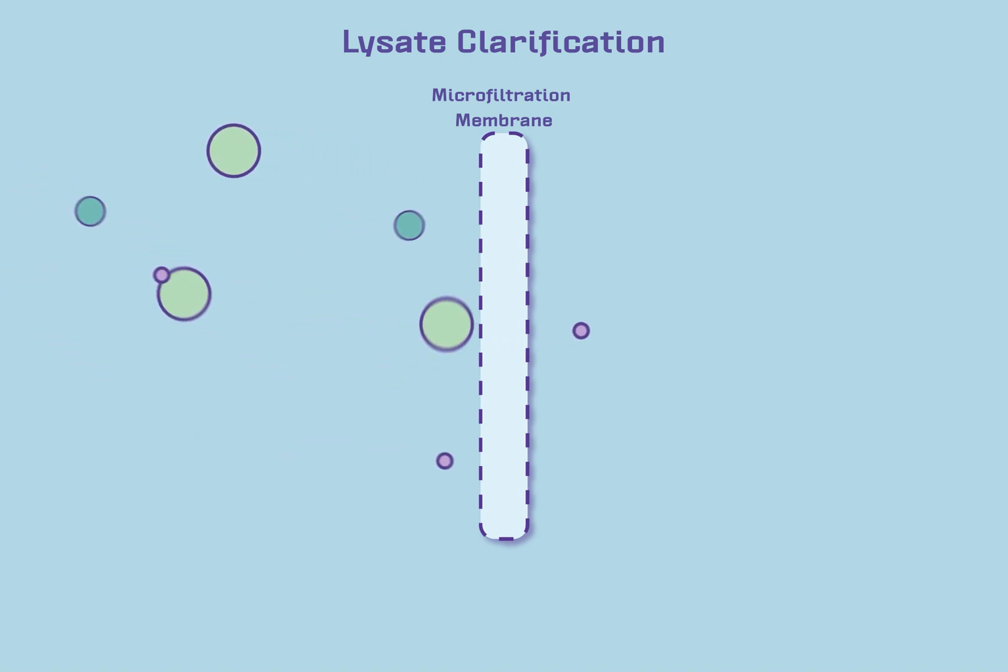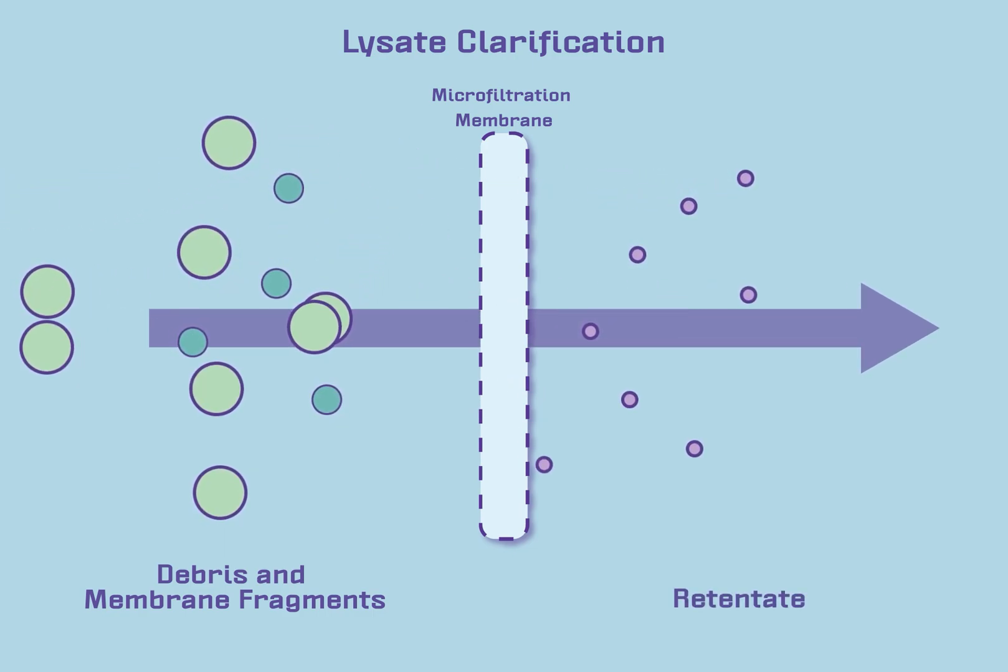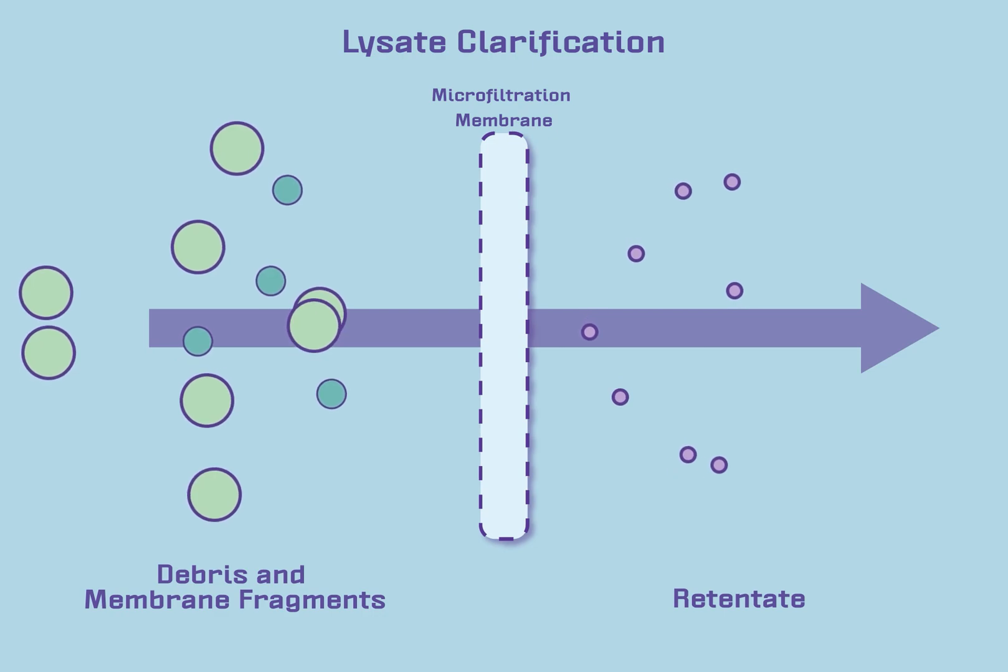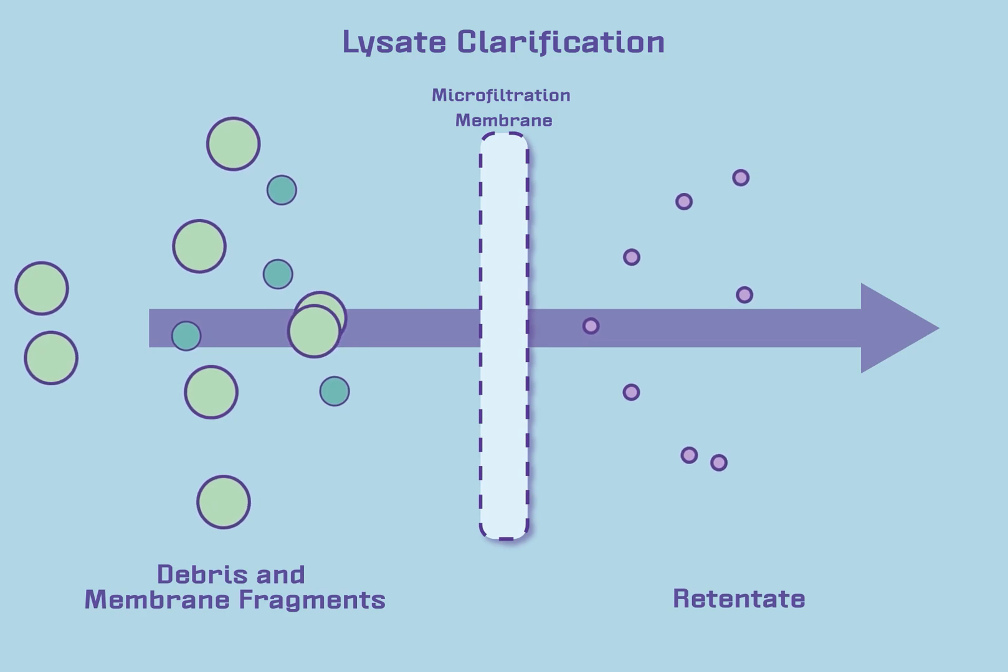After cells are lysed, the lysate includes a significant amount of debris, including fragments of cell membrane and unlysed cells. Typically, microfiltration membranes are used to remove these materials and prepare for purification by chromatography.